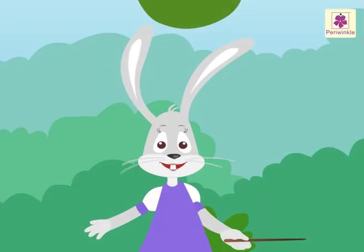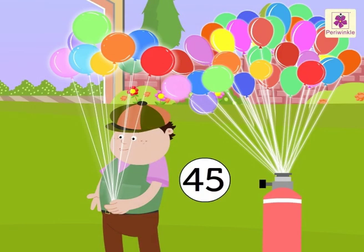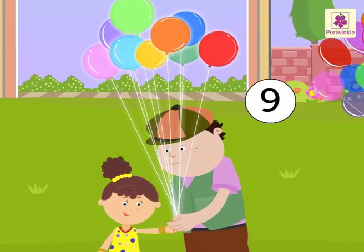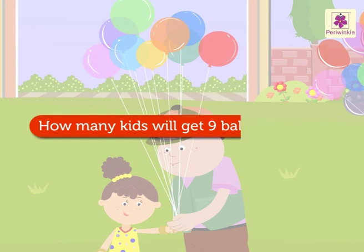If we look at the same example in a different way, there are 45 balloons. If each kid has 9 balloons, then find the number of kids such that the balloons are distributed equally. Here, we need to divide 45 by 9 to find the quotient. We get 45 divided by 9 is equal to 5.